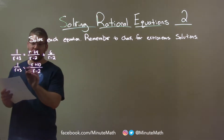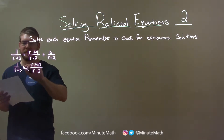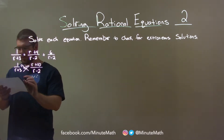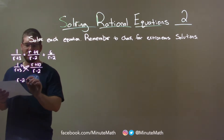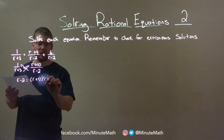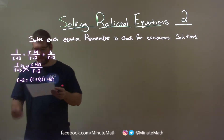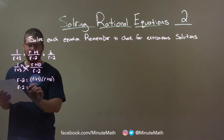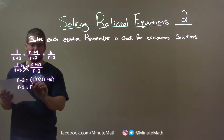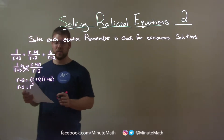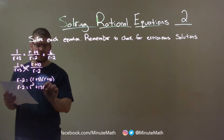Now I'm going to cross multiply — get everything to the numerator. 1 times (r − 2) is just r − 2. On the right-hand side, we have (r + 3) times (r + 10). We want to FOIL that out. So the left is r − 2. r times r is r squared, r times 10 is 10r, 3 times r is 3r — add them together, we have 13r — and 3 times 10 is 30.